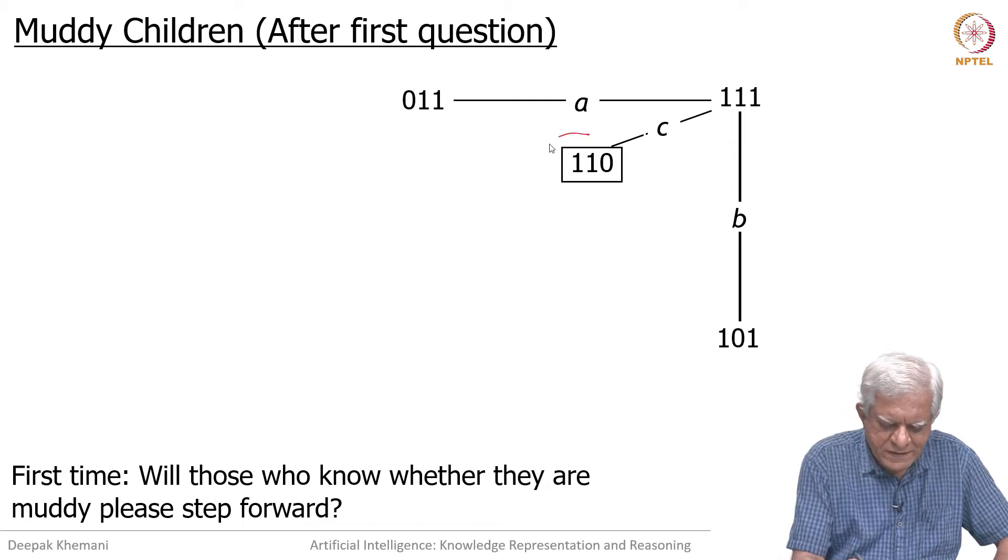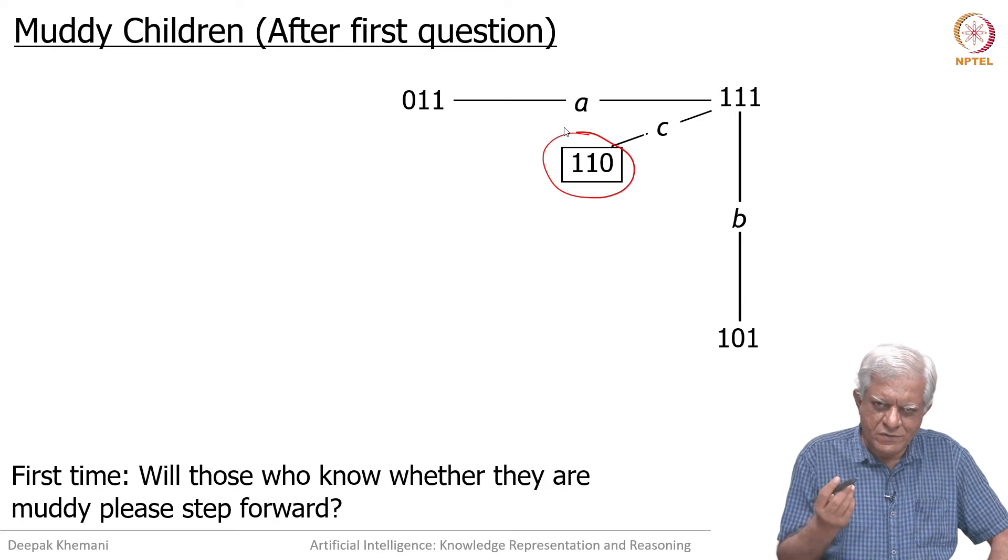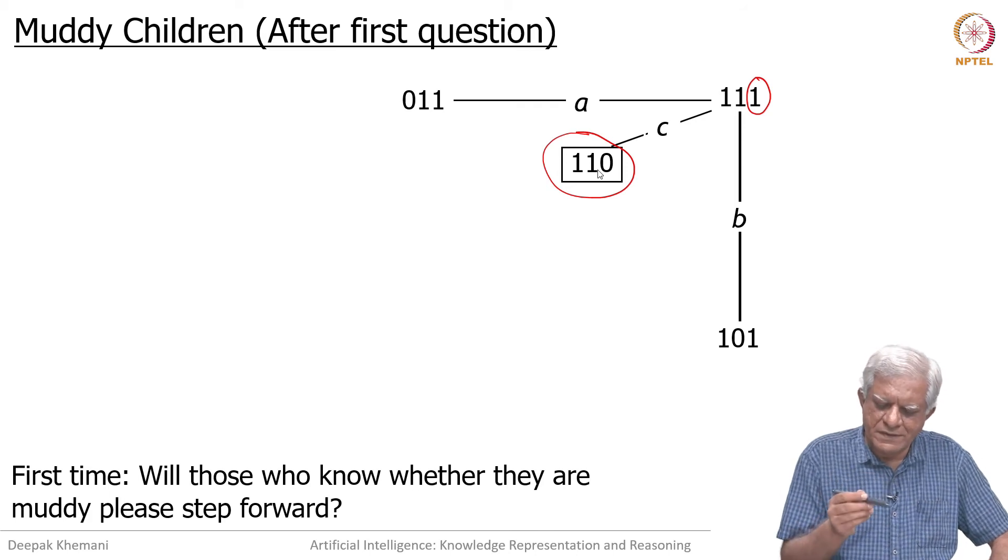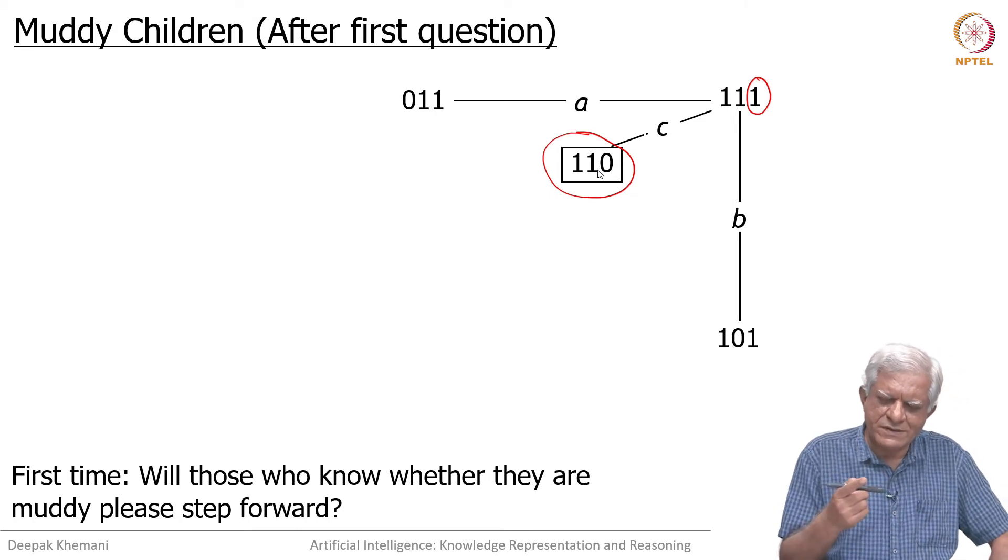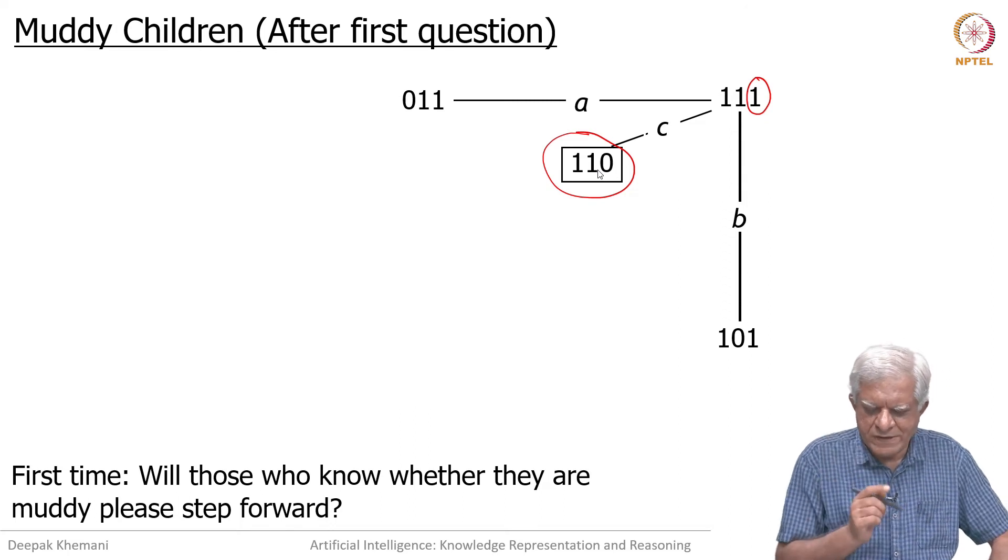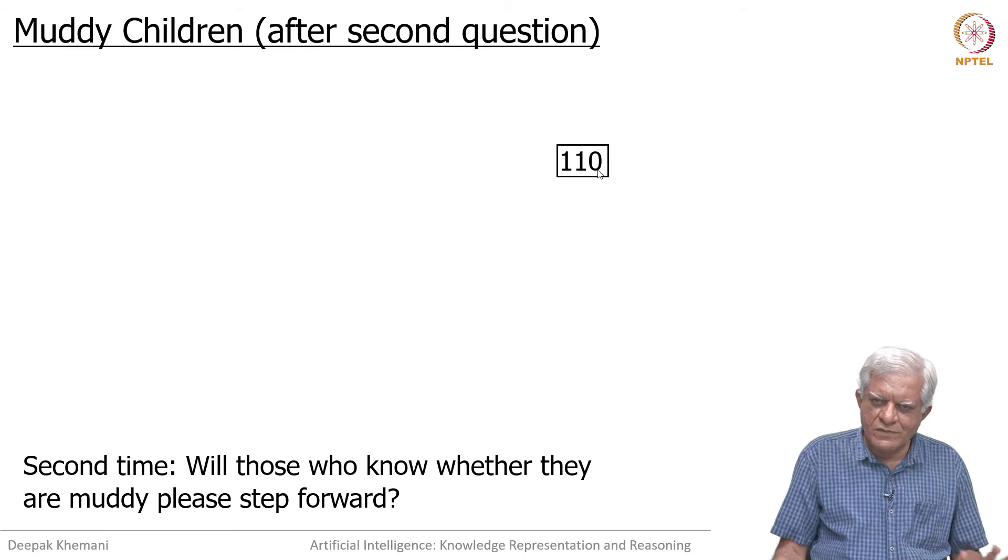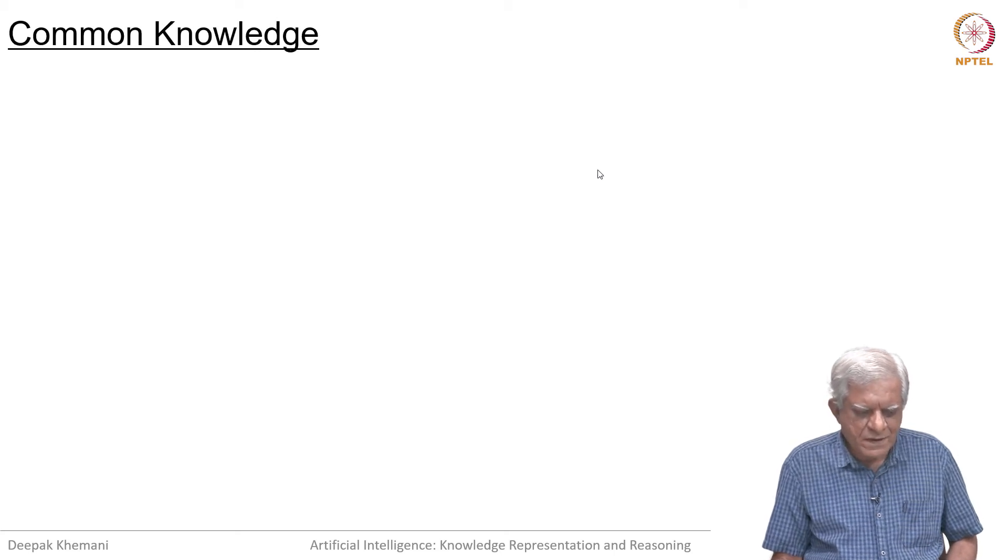If any one of them was the real state, then they would have known and would have stepped forward or said yes. So all those states vanished. We are only left with these states. Now you can look at this state, the real state here. In this real state there is only ambiguity for Kathy. Kathy can see that Ann and Bob's foreheads are muddy, but she cannot see her own forehead. But for the other two people, there is no ambiguity. They know exactly that at least two kids have to be having muddy foreheads. Next time when the father asks the question, everybody knows, and Ann and Bob will say yes, I know that I have mud on my forehead.